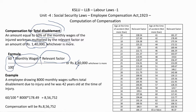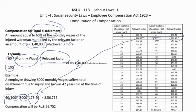Same example: employee drawing ₹8,000 suffers total disablement, aged 42. Calculation: (60/100) × 8,000 × 178.49 = ₹8,56,752. Since this is higher than ₹1,40,000, the compensation is ₹8,56,752. Note that compensation for total disablement is always higher than compensation payable at the time of death.